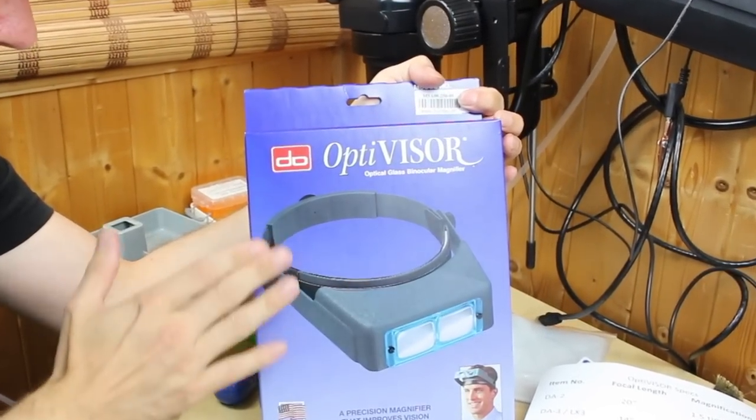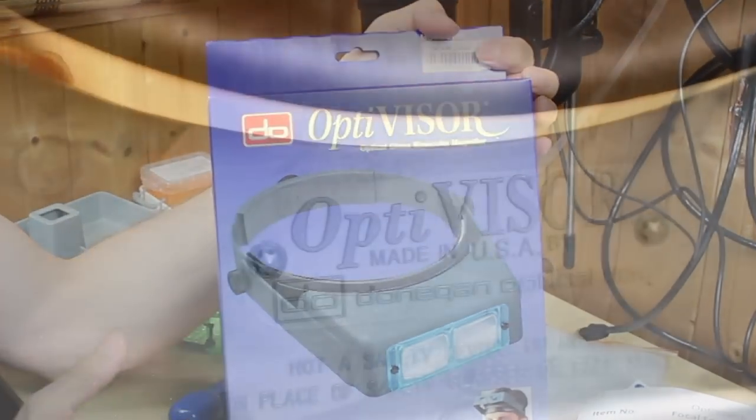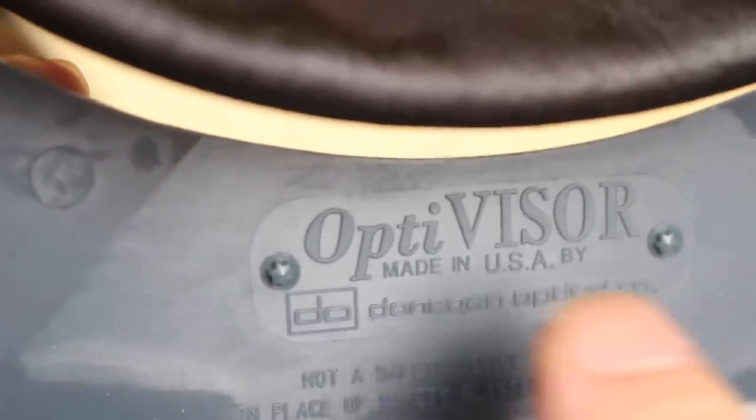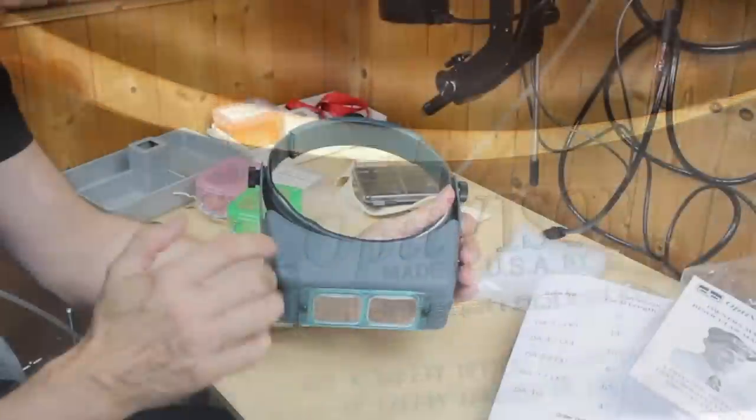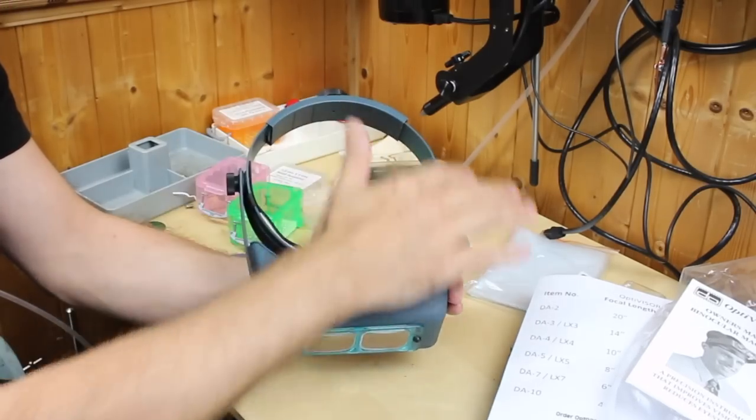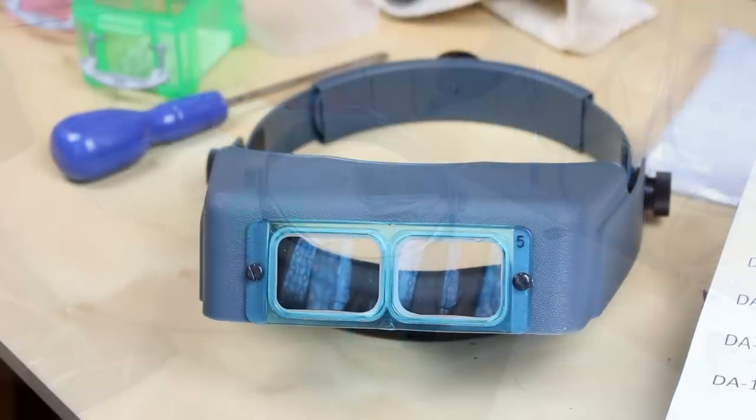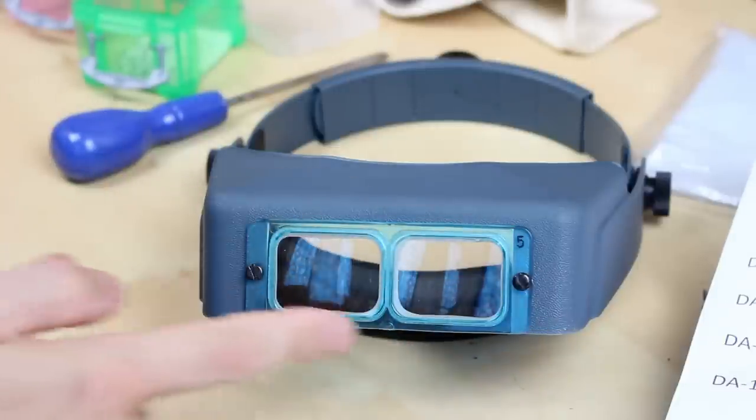So here is the Optivisor. Now there are a lot of cheap copies around on the market, so make sure that you get a genuine Optivisor made in the USA by Donegan. It consists of the visor section, an adjustable headband, and the all-important part, the lenses at the front. And this is what makes the Donegan Optivisor special.